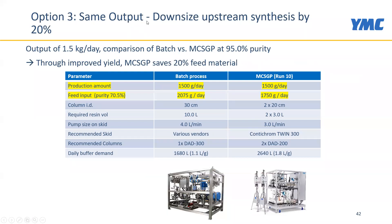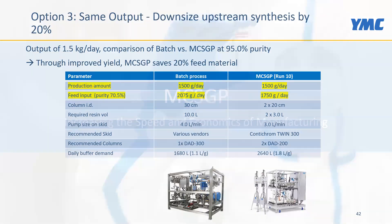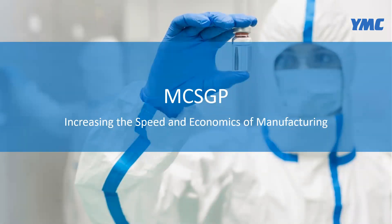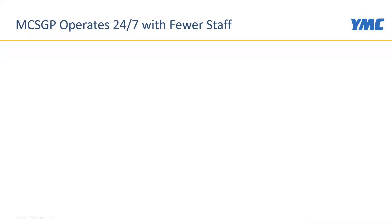Option three shows the same output with downsizing of upstream synthesis. To get 1,500 grams a day, batch chromatography requires loading 2,075 grams per day of feed material. With MCSGP, significantly less is needed. Through the improved yield, MCSGP can save 20% of feed material, meaning the upstream synthesis can be downsized. MCSGP thus gives a variety of options all related to the improvement of productivity.